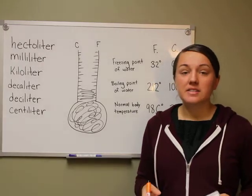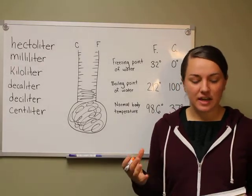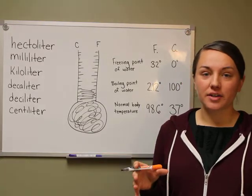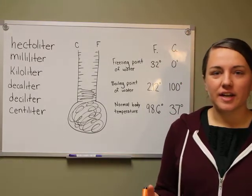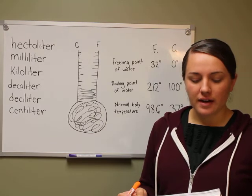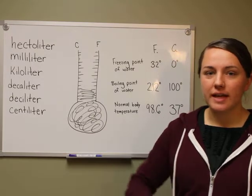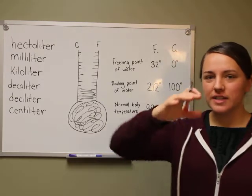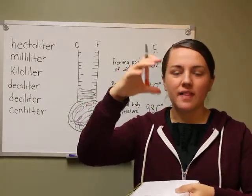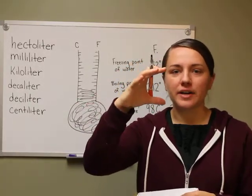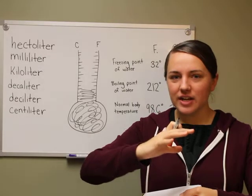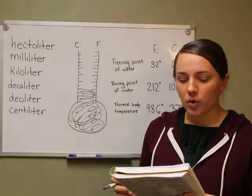The basic unit of capacity in the metric system is the liter. A liter is slightly more than a quart. If you ever see the big jugs of root beer or ginger ale, that is two liters. So half of that is one liter. A liter is a little more than a quart.